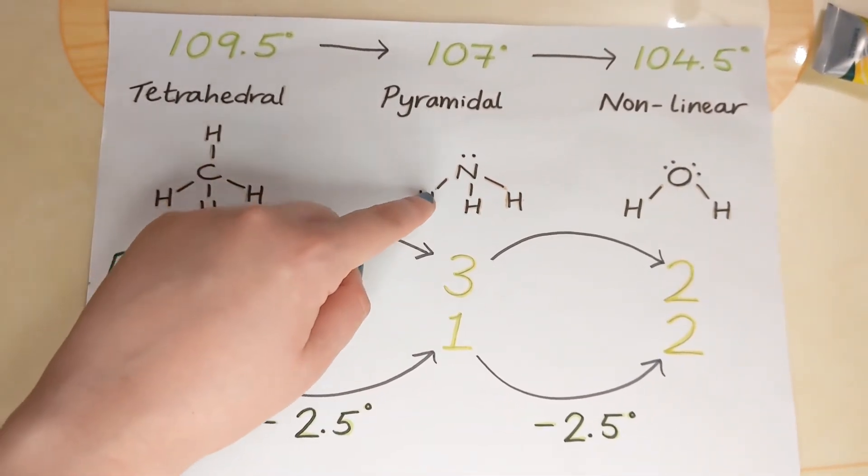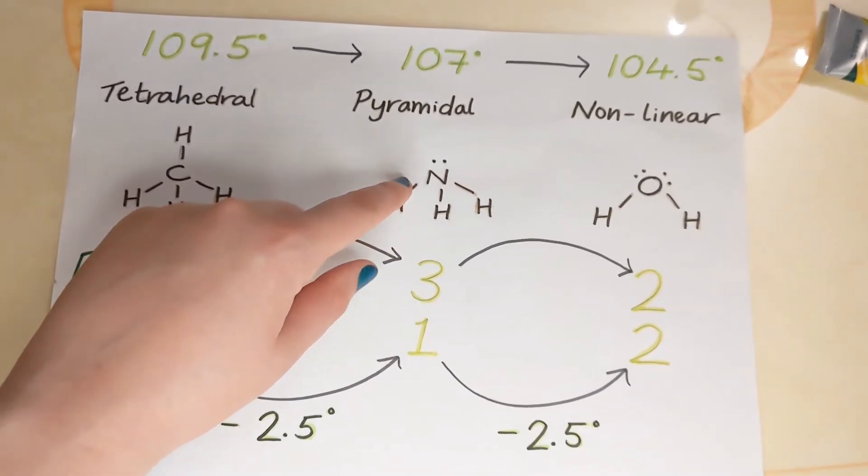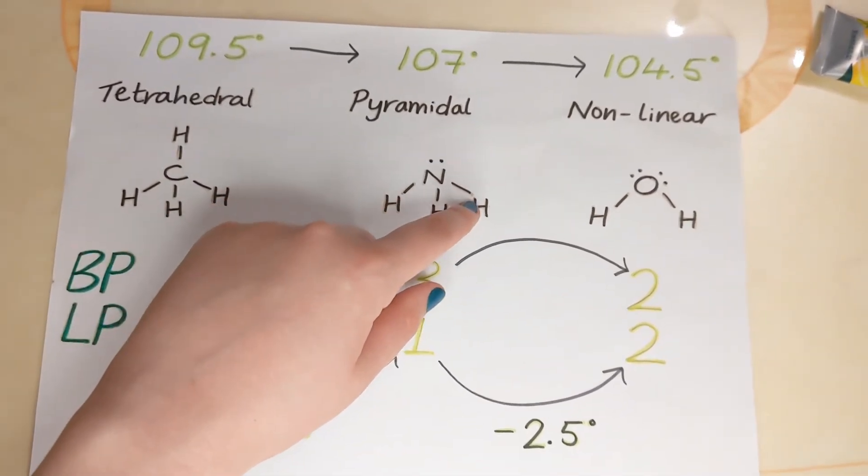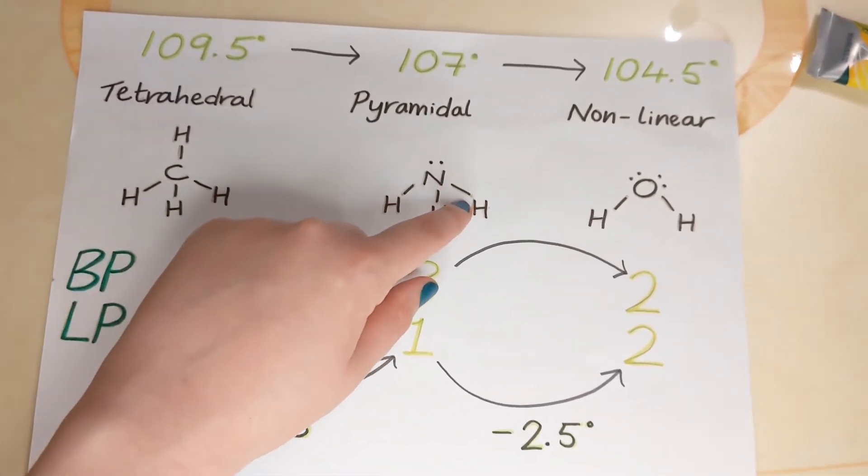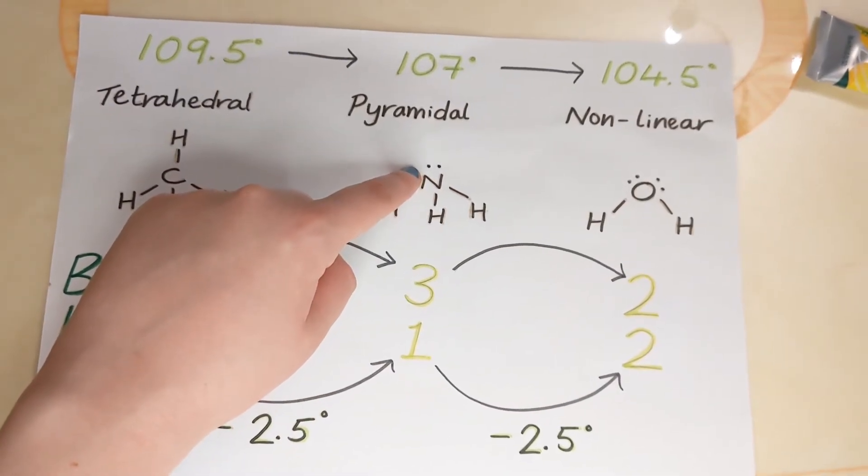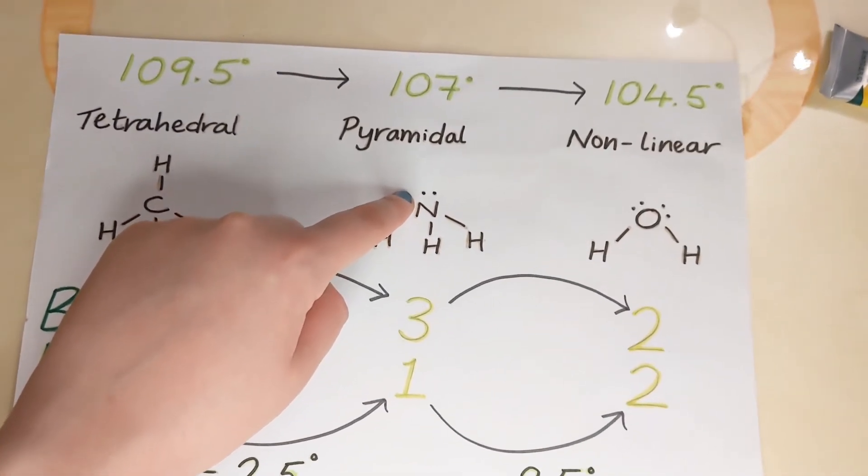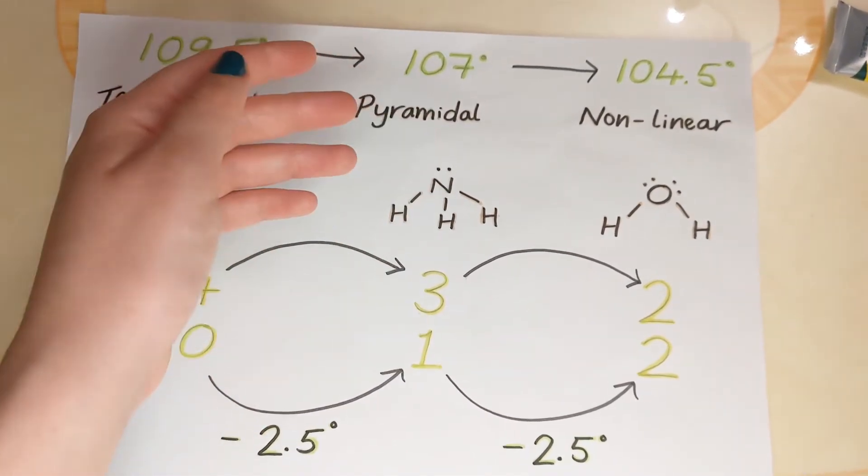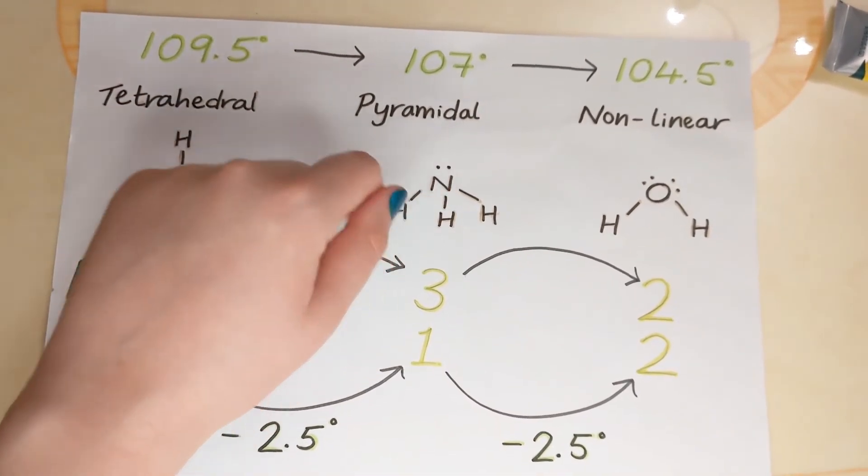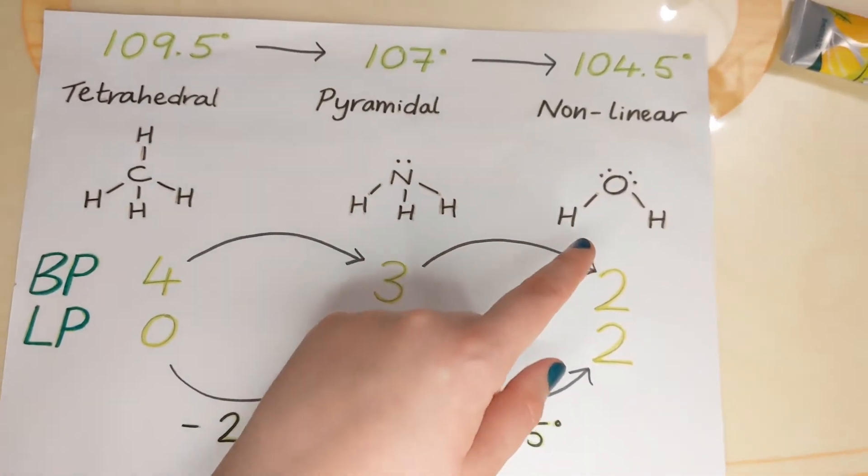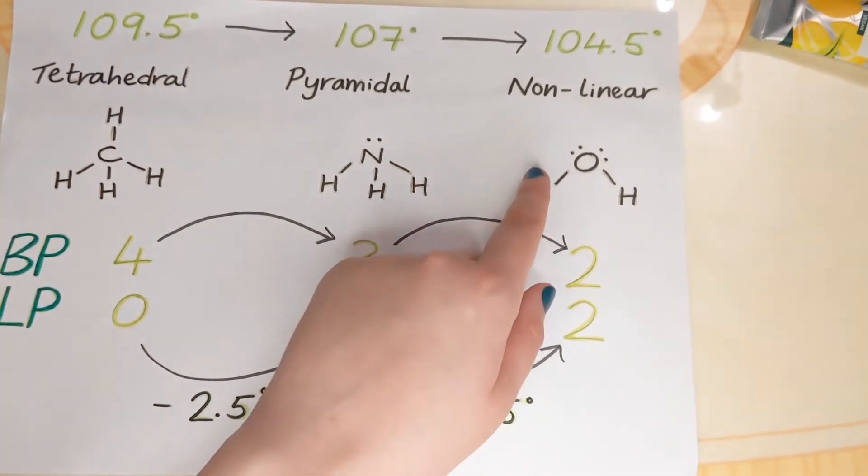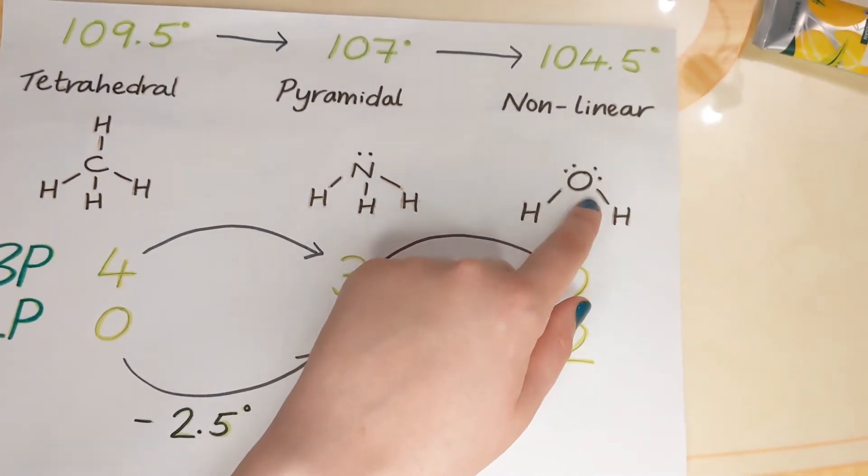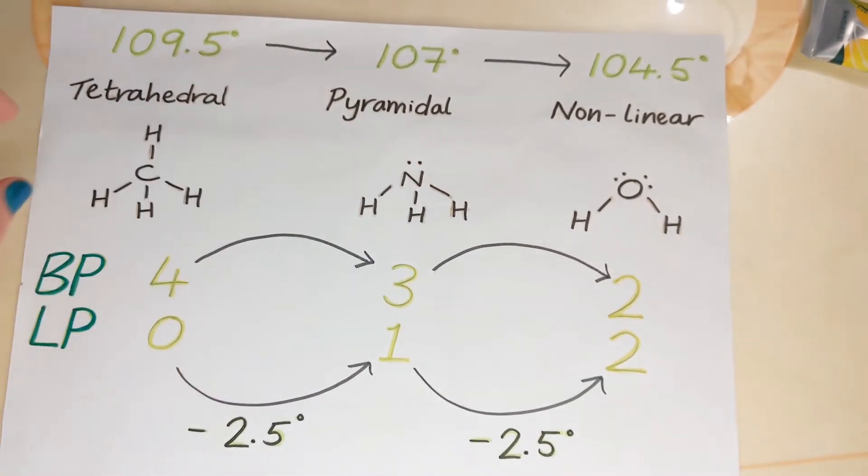The second molecule, that's ammonia, has three bonding pairs of electrons in the three single bonds and it's got a non-bonding pair as well. That's a lone pair of electrons, an extra pair that's left over that's not involved in bonding. And lastly we've got a water molecule, two bonding pairs of electrons and two lone pairs of electrons.